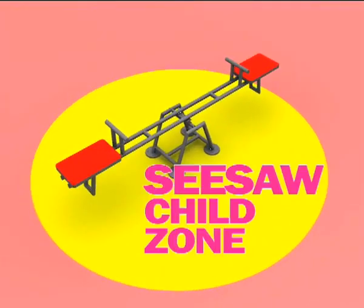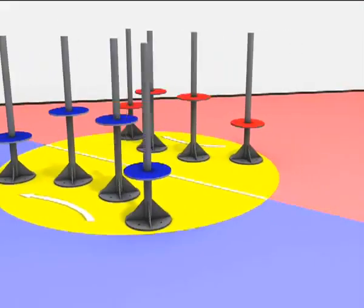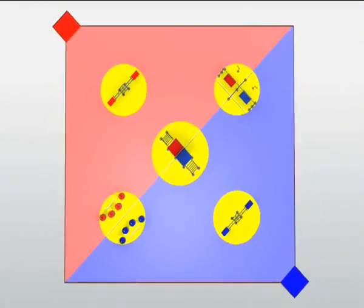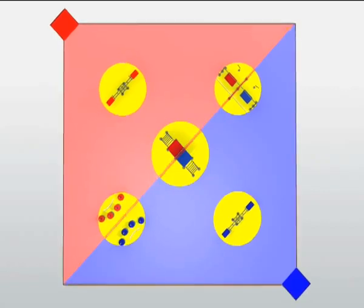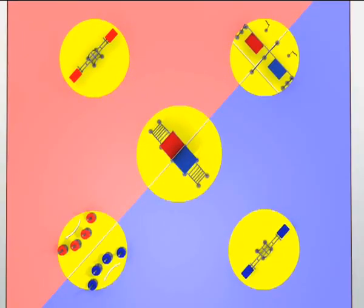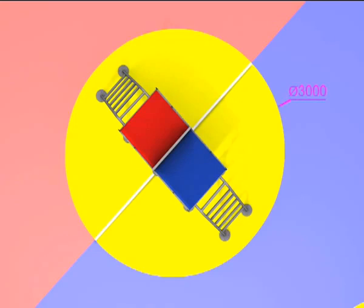Two seesaw child zones, a swing child zone, a pole walk child zone, and the jungle gym child zone. The game field has separate seesaw child zones for each team. The remaining zones are common. However, game activities are provided separately. Each of the seesaw child zones, pole walk child zone, and swing child zone is 2.5 meters in diameter. The jungle gym child zone is 3 meters in diameter.